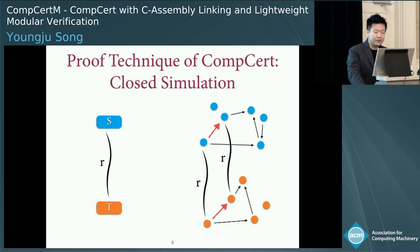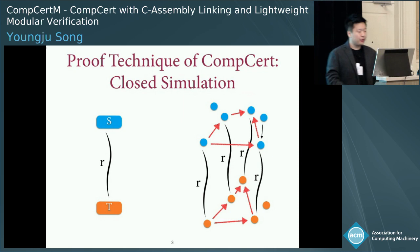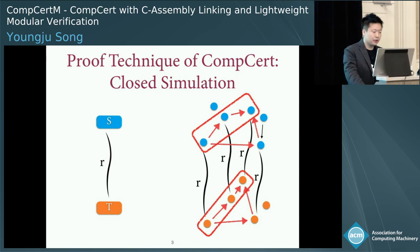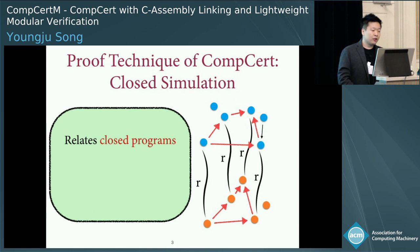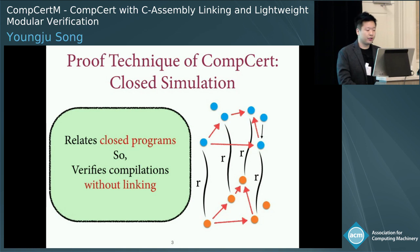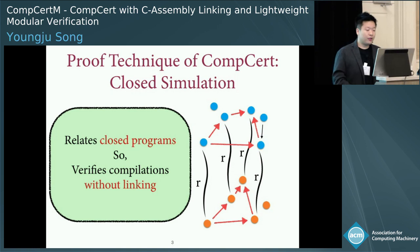The proof proceeds like this. It is then straightforward to establish behavioral refinement, since each target behavior has a matching source behavior. However, this technique works only for closed programs, by which I mean those that contain all the information needed to execute them. This is because without executing the programs, the simulation argument cannot proceed. Due to this restriction, the original CompCert's correctness proof could not support any form of separate compilation, because that involves compilation of open programs.